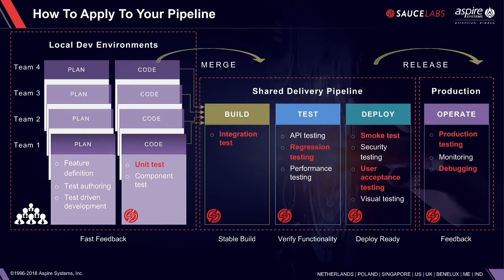With a cloud solution like Sauce Labs, the build phase ensures a stable build. During the testing phase, you verify functionality through API testing, regression testing, and performance testing — including front-end performance testing, which is critical for front-end-heavy applications, especially JavaScript applications. Through deployment, you make sure it's deployment-ready, and then feedback closes the loop back to your application pipeline.